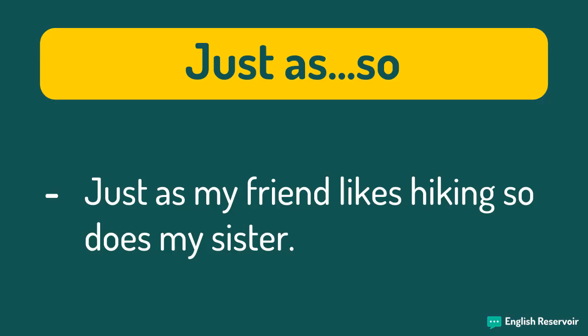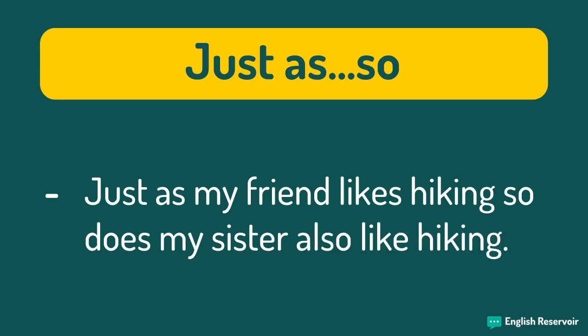Just as, so. We can use 'just as, so' to show a similarity between two people or things. It's also common to use ellipsis with this correlative conjunction to shorten the sentence. Ellipsis is when you omit words to make a phrase shorter. For example: 'Just as my friend likes hiking, so does my sister.' This phrase has the same meaning as 'just as my friend likes hiking, so does my sister also like hiking.'